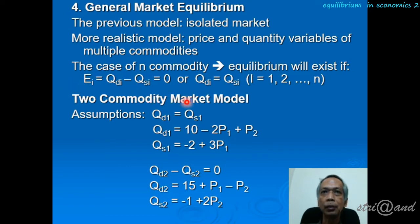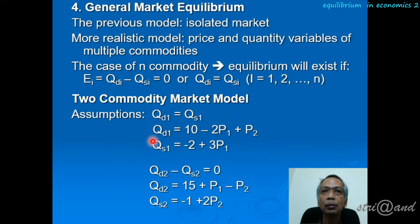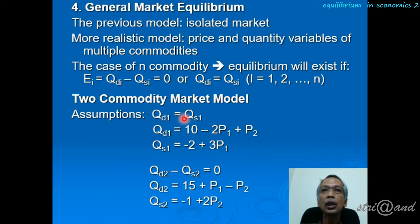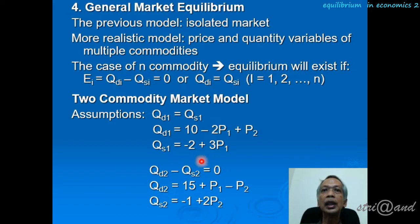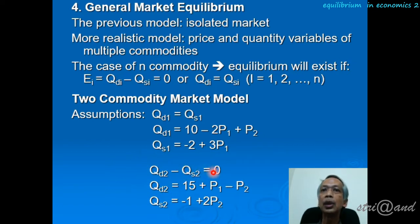For example, when we have two commodities in the market — a two-commodity market model — the requirement for equilibrium applies not only to commodity one, but also to commodity two. The quantity demanded for commodity one should equal the quantity supplied for commodity one, so there is no excess demand in commodity one. The same condition applies to commodity two.